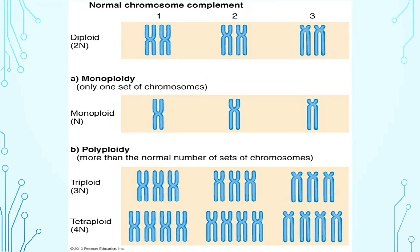There is a correlation between the ploidy level and the size of the organism: the higher the ploidy level, the larger the size of the organism. Organisms with an odd number of chromosome sets are often sterile in nature because there is a problem in pairing of cells during meiosis, as synapsis can take place only between two of the three homologous chromosomes. As a result, the offspring generation is often sterile.